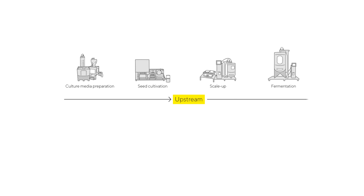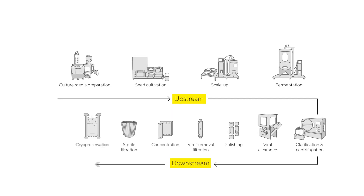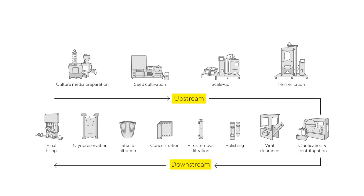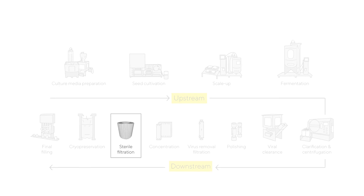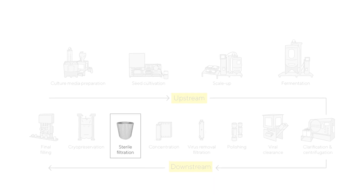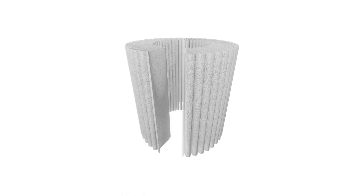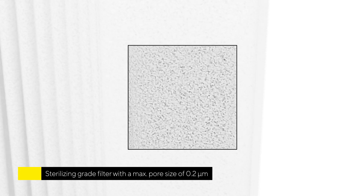Every sterile filtration's goal is the complete removal of microorganisms from the product stream. A sterilising grade filter with a maximum pore size of 0.2 micrometres should be validated to reproducibly remove viable microorganisms from the process stream, producing a sterile effluent, according to the FDA.